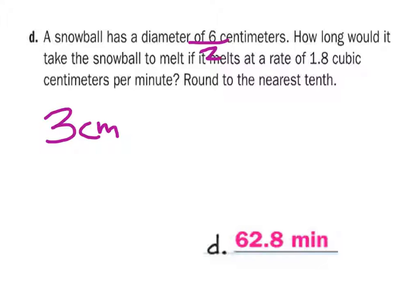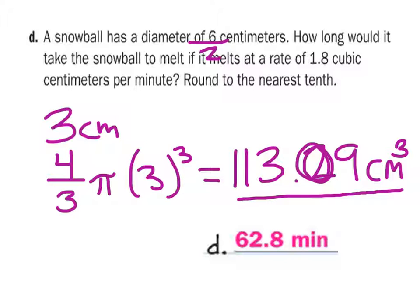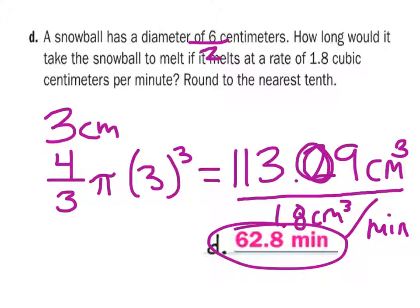Let's find the volume of this. We're going to take four-thirds pi times the radius, three, cubed. What did that give us? 113.1. We're just going to divide this by the rate, 1.8 centimeters cubed per minute. That'll give us our 62.8.